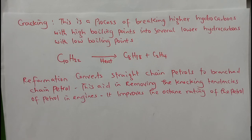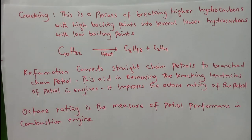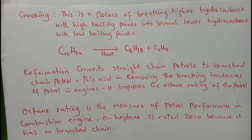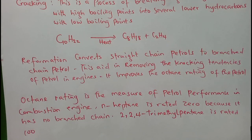To define octane rating: octane rating is the measure of petrol performance in combustion engines. Straight-chain heptane has no branch chain and is rated zero. Any hydrocarbon with branch chains is rated higher. Those with more than two branch chains can be rated up to 100 — for example, 2,2,4-trimethylpentane is rated 100.